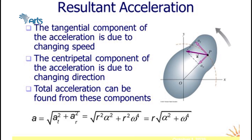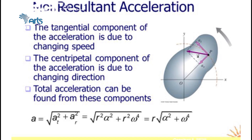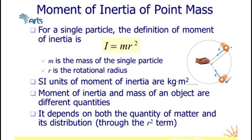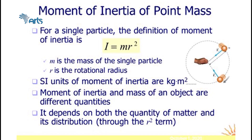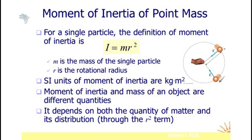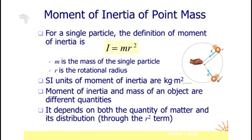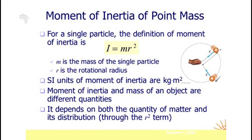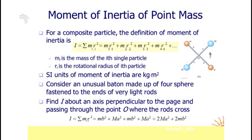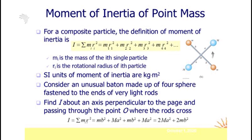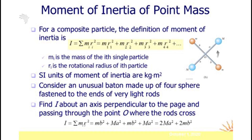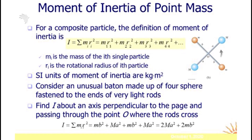For rotational dynamics, the moment of inertia of a point mass is defined as I equals MR², where M is the mass of the particle and R is the rotational radius. Its unit is kilogram·meter². Moment of inertia differs from mass — it depends on both the quantity of matter and its distribution. For a composite system of particles, the moment of inertia is I equals the summation of m_i·r_i², where m_i is the mass and r_i is the rotational radius of the i-th particle.